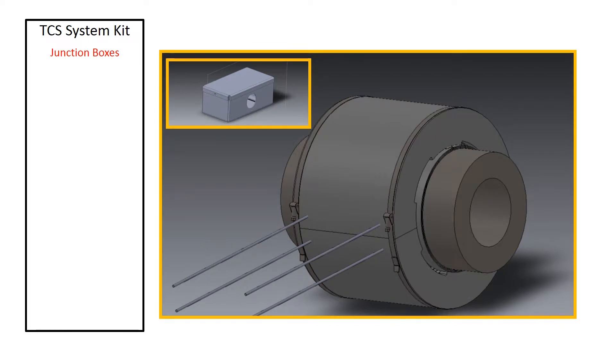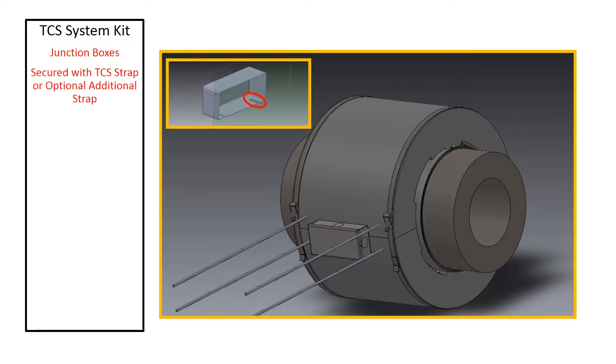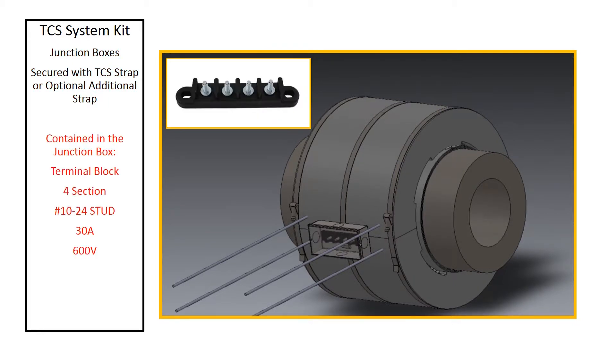Junction boxes are also provided for electrical connection and one box is required for each TCS section. They are secured in place using slots on the underside of the box and the existing TCS straps. Notice the slits in the bottom of the box allowing the strap to be threaded through. Contained in the junction box is the terminal block rated appropriately for the application.